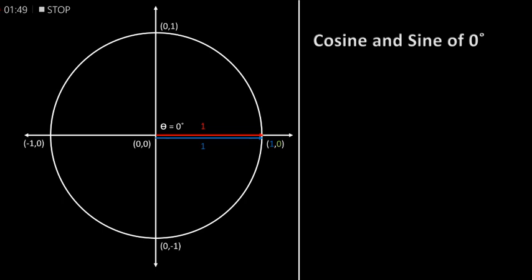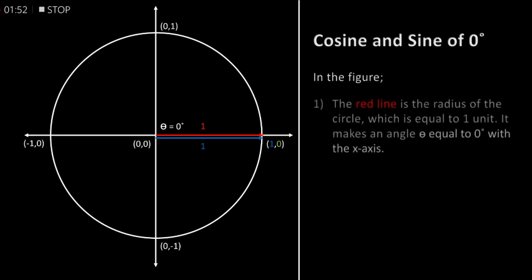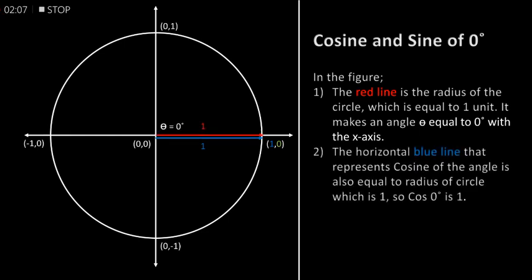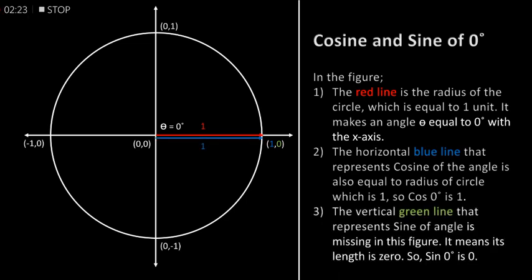Cosine and sine of zero degrees. In the figure, the red line is the radius of the circle which is equal to one unit. It makes an angle theta equal to zero degrees with the x-axis. The horizontal blue line that represents cosine of the angle is also equal to the radius of the circle, which is one. So cos of zero degrees is equal to one. The vertical green line that represents sine of the angle is missing in this figure — it means its length is zero — so sine of zero degrees is zero.